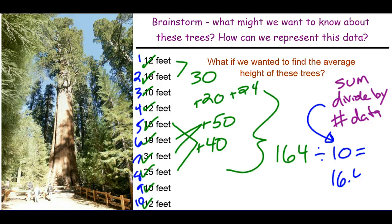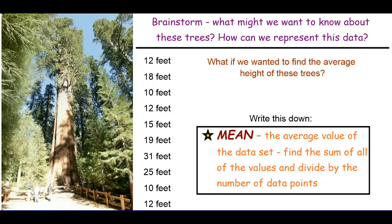We end up with 16.4 feet as an average. When we talk about data points, we don't tend to use the word average — we use the word mean, the average value of the data set. Find the sum of the values and divide by the number of data points. Go ahead and pause the video and write down the definition of mean.